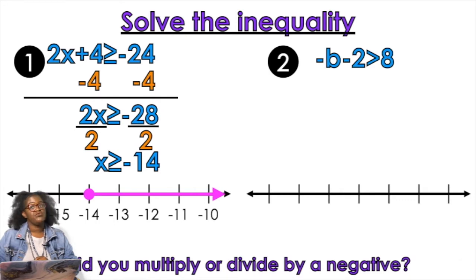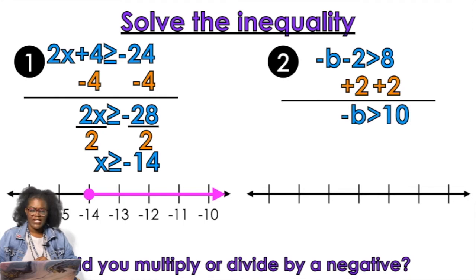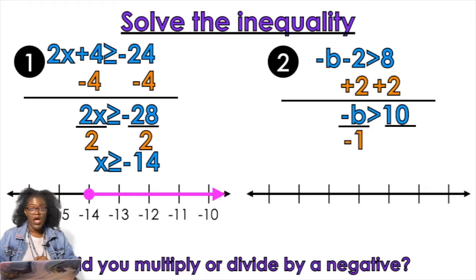Next we have -b - 2. First we need to get rid of the -2 by adding 2 to both sides. That brings down -b > 10. How do we get rid of that negative in front of the b? You divide by -1.